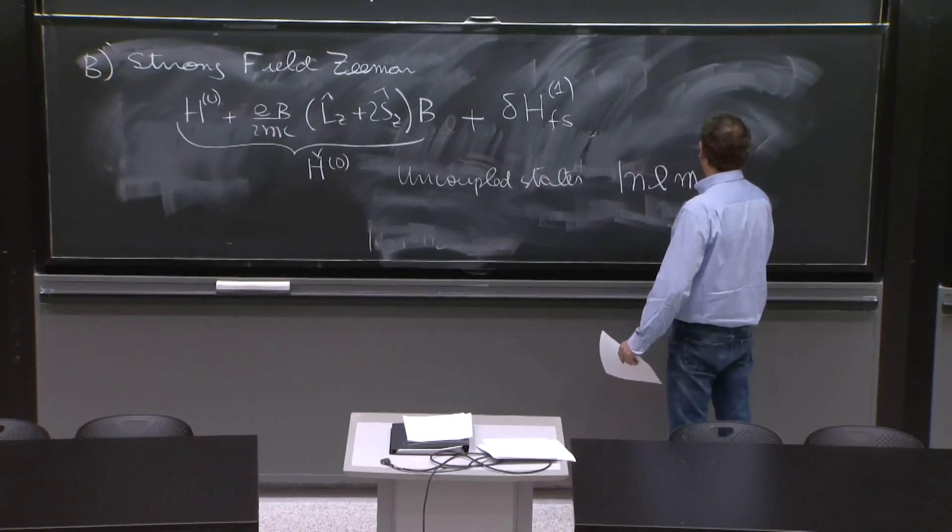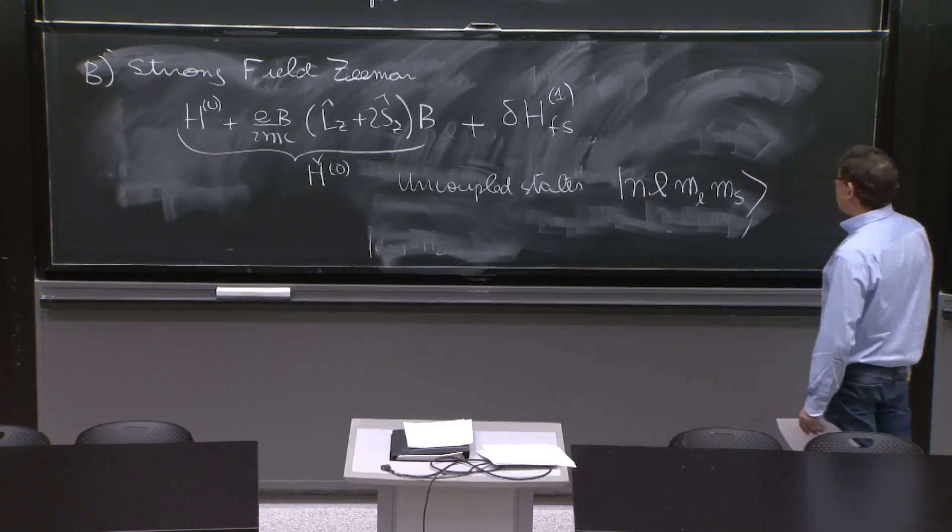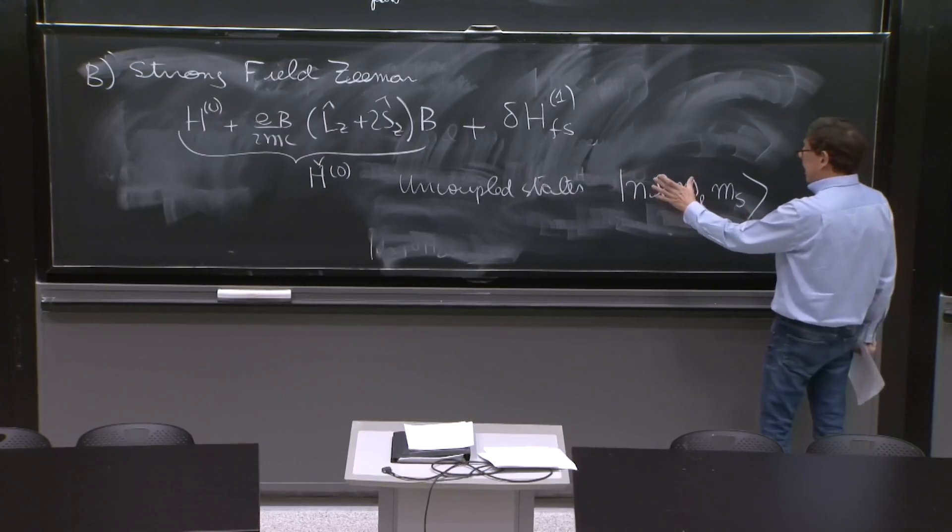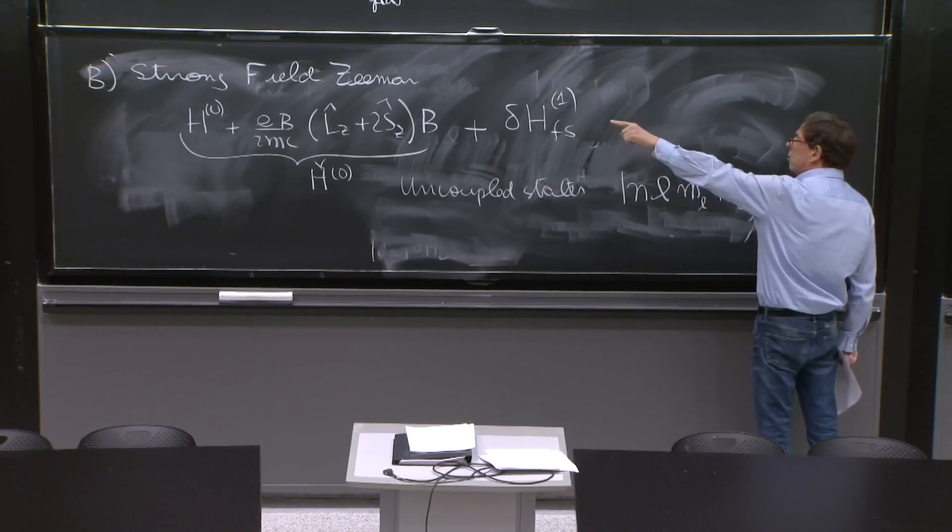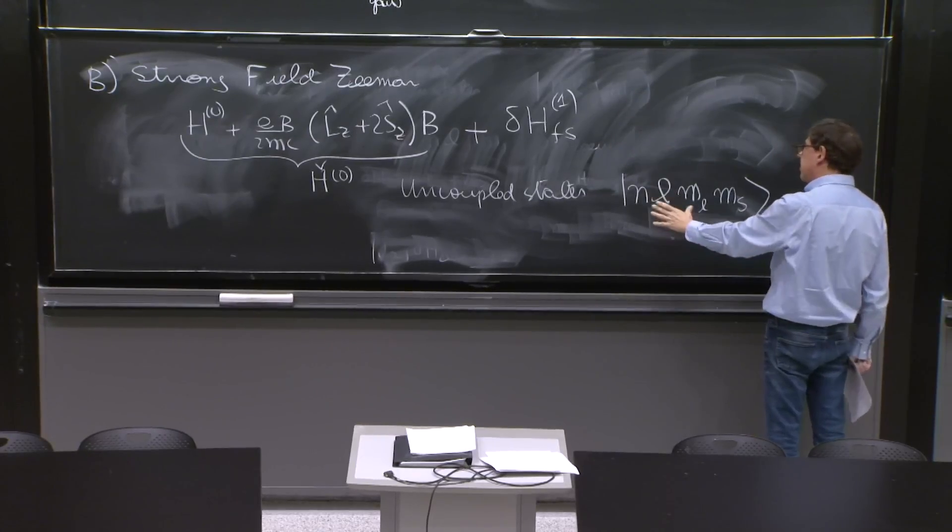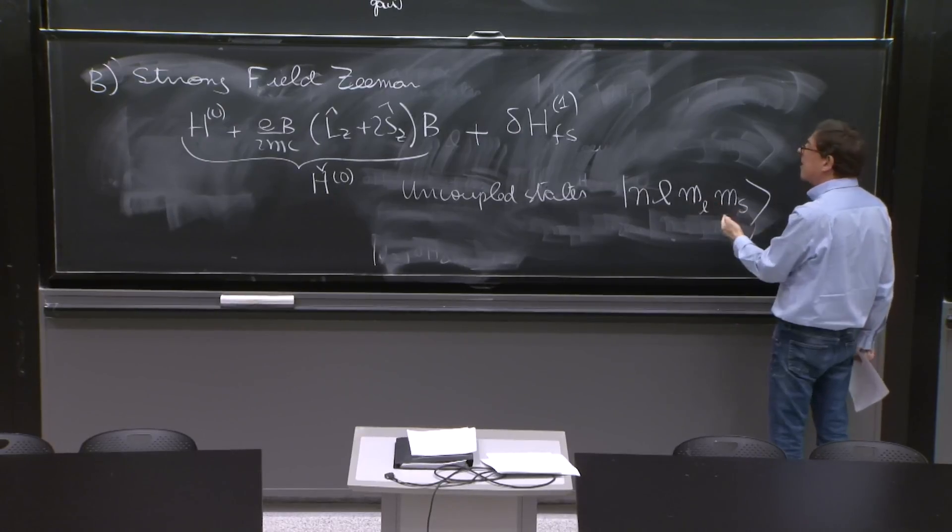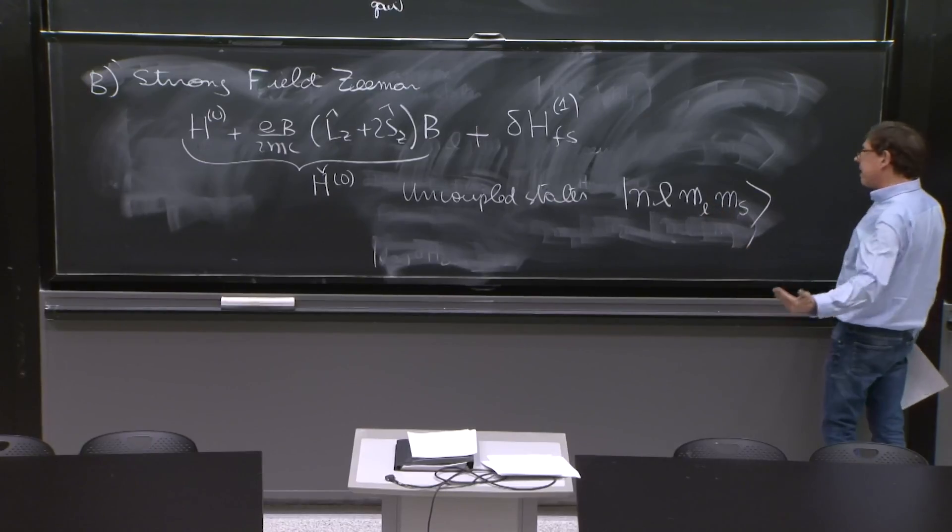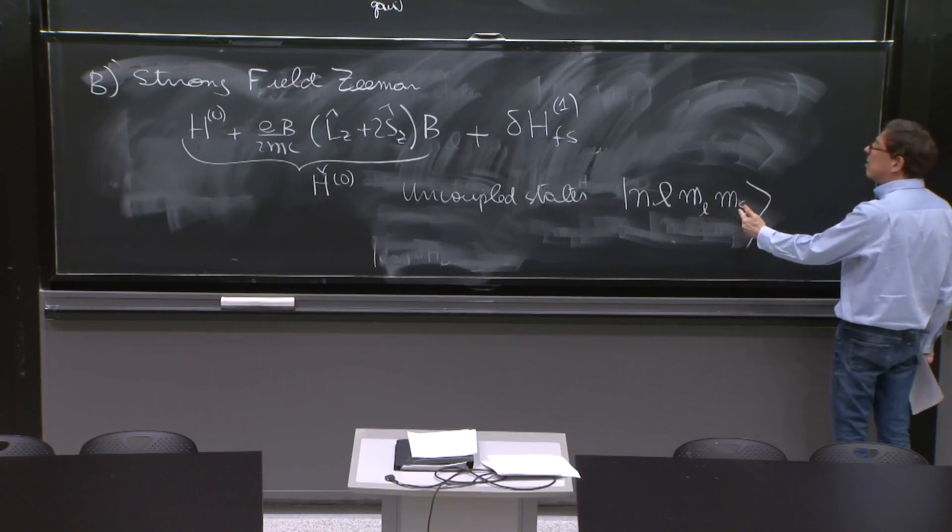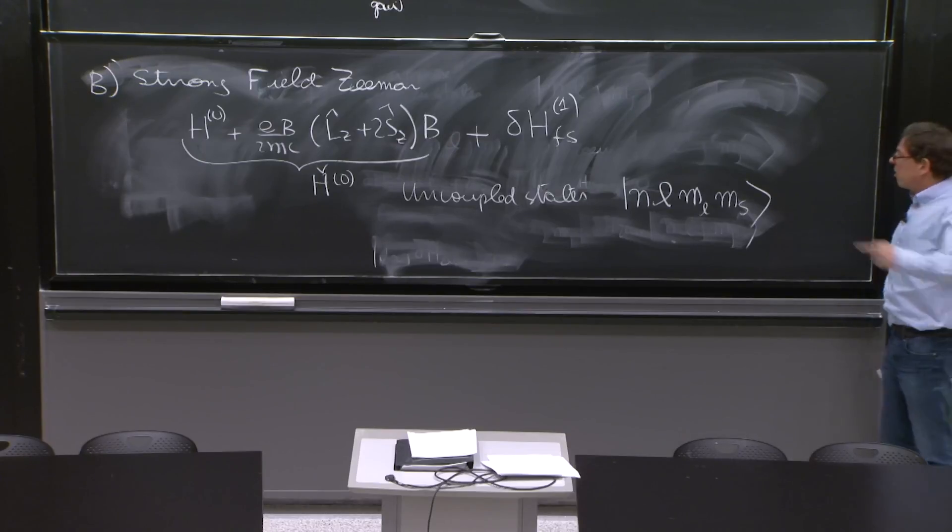N, L, ML, MS, those were eigenstates, exact eigenstates of h0, the good old hydrogen atom. But actually, they are exact eigenstates of Lz and exact eigenstates of Sz. So they're exact eigenstates of the Zeeman Hamiltonian. So these states are it.